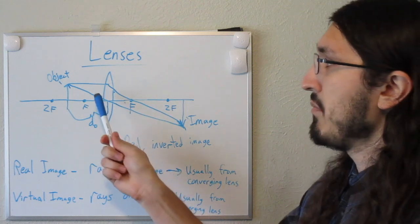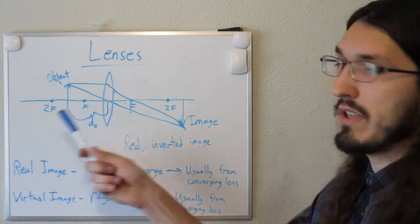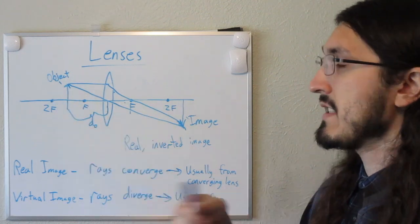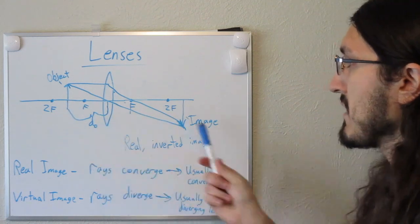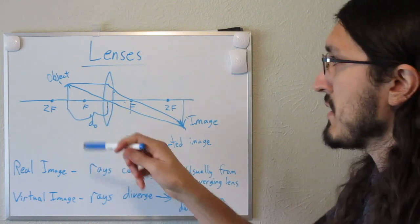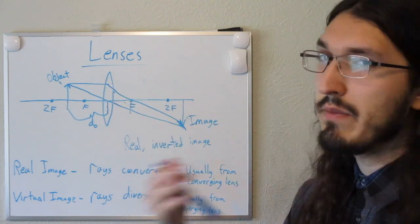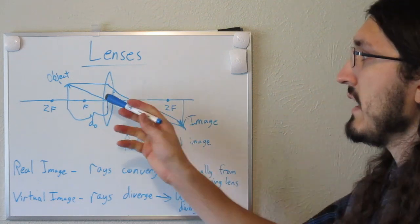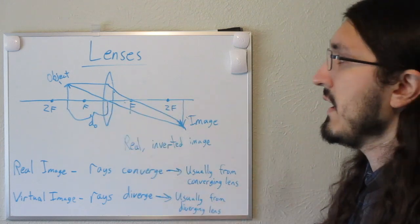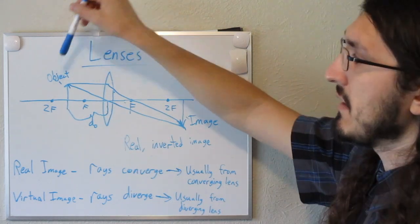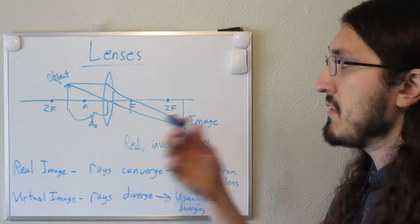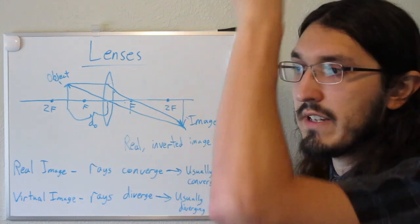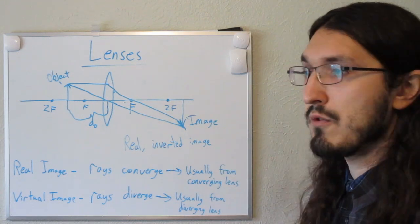If I put the object beyond 2f it's going to make a different type of image in a different spot and size. If I put the object on 2f the same thing changes. Between 2f and f is the case I just showed. If the object is placed on the focal point, no image is created. And if the object is placed between the focal length and the lens, only in that case is a virtual image created behind the lens, which is bigger. I'll provide a link in the description to show all the different cases and how those images are formed for a converging lens.